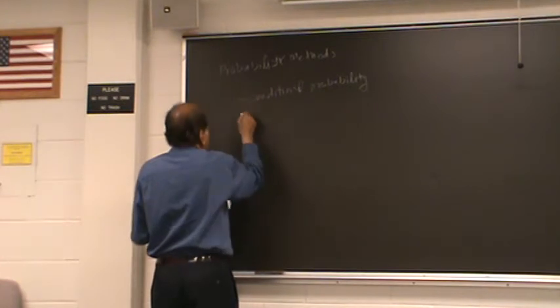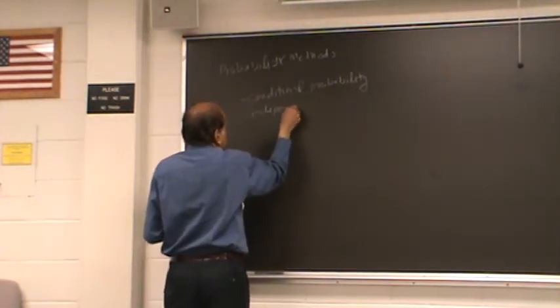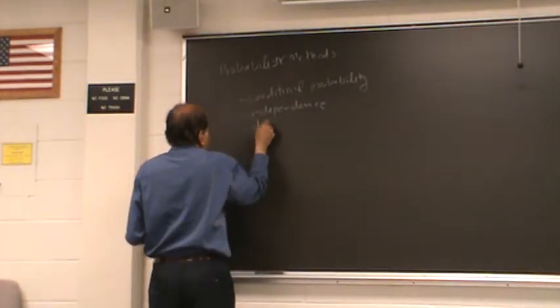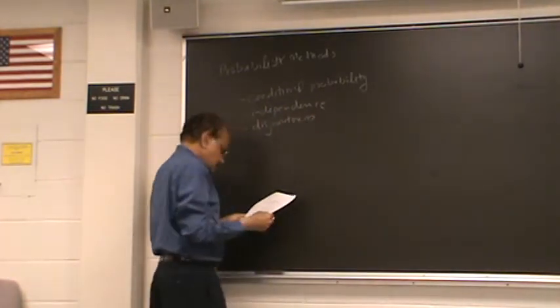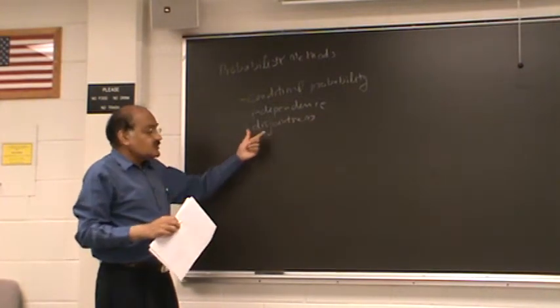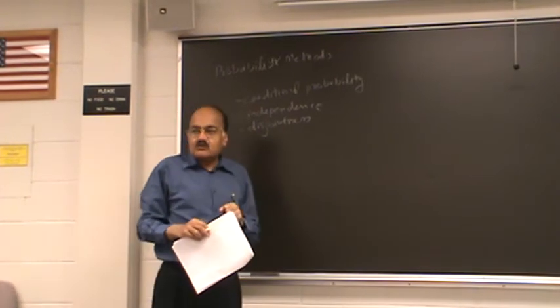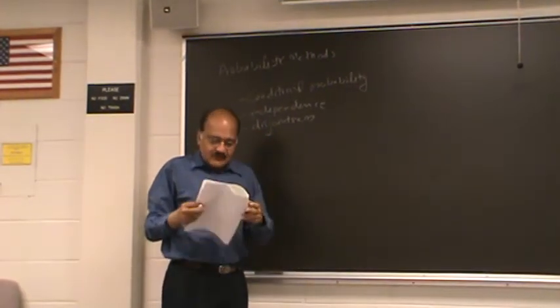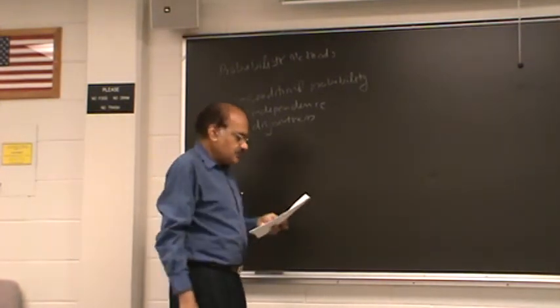We looked at independent events, and disjointness of events. Disjointness is something that allows you to break an event into pieces, which is often needed for some calculations. You break an event into pieces and figure out the probability of each separate piece.